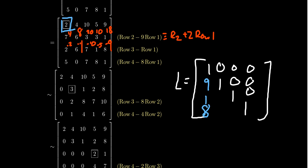Continuing row four plus three times row one: ten times three is 30; 37 subtract 33 gives four. Five times three is 15 plus eight gives 23, which reduces to one mod 11. Nine times three is 27 plus one is 28; subtract 22 gives six. That completes the first level of row reduction. We now move the pivot to the two-two position and eliminate the numbers below it — no scaling, no interchange.